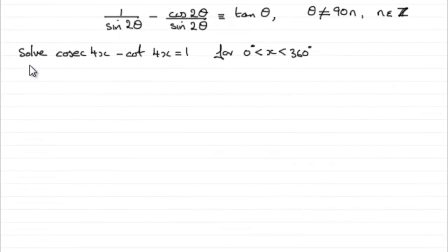Now for the last part, we've got to solve cosec 4x minus cot 4x equals 1 for x between 0 degrees and 360 degrees.